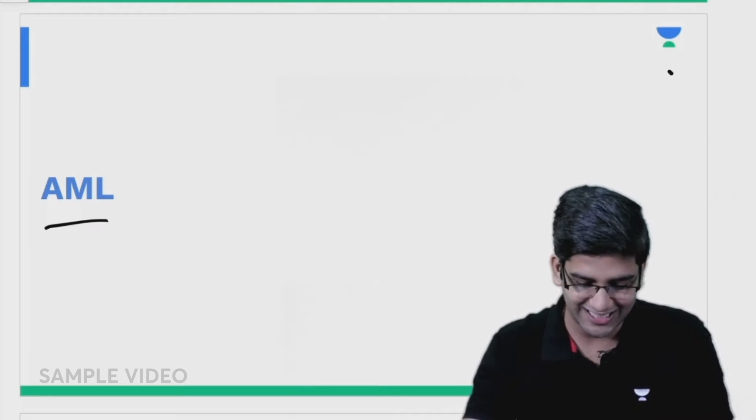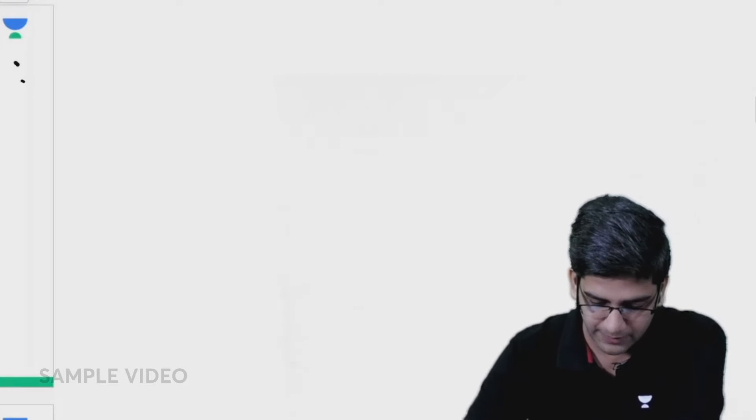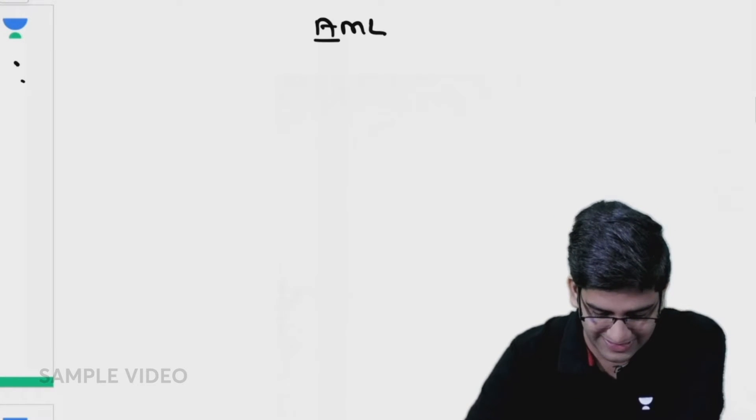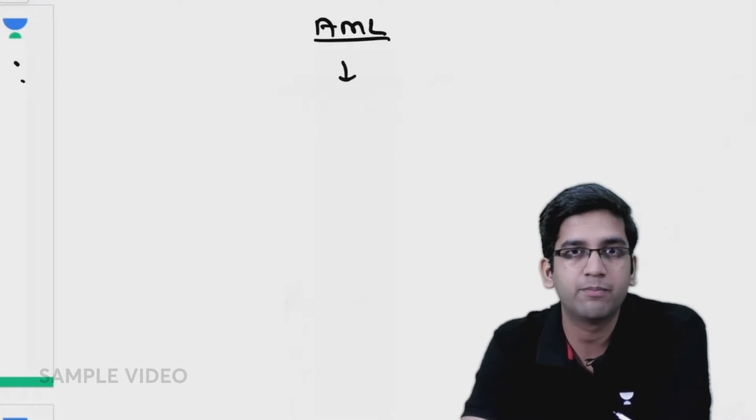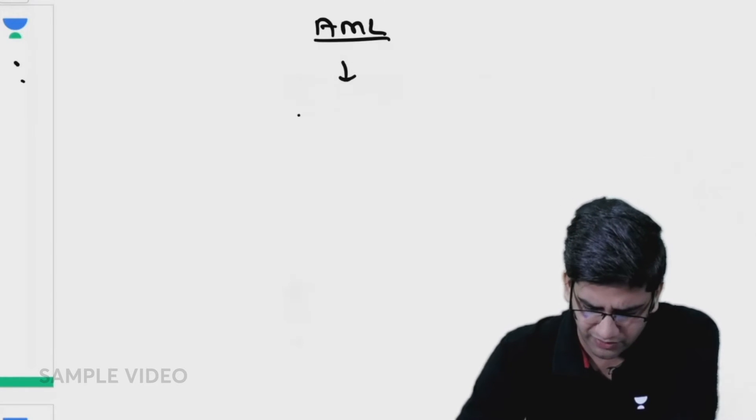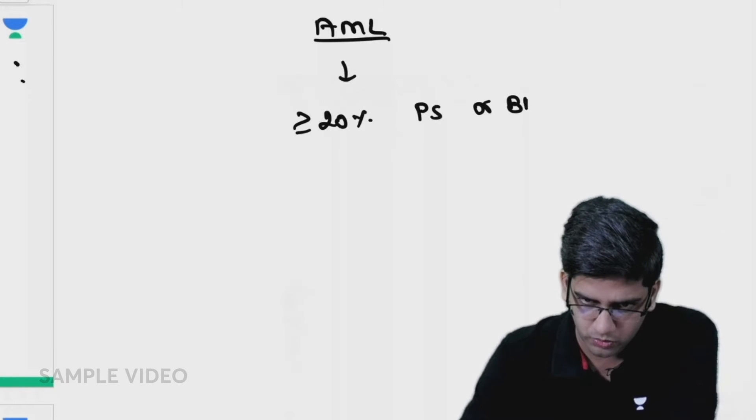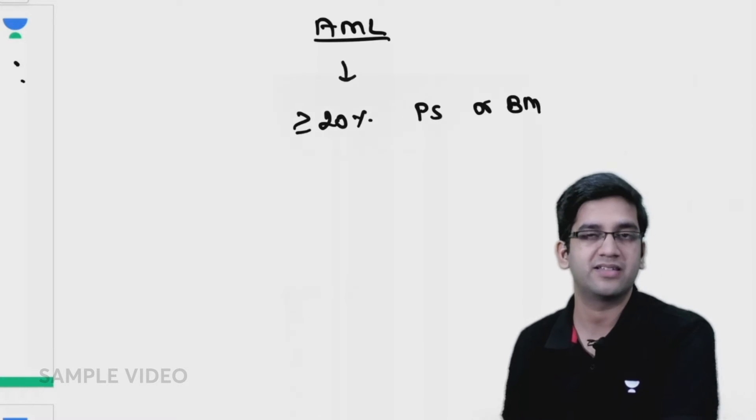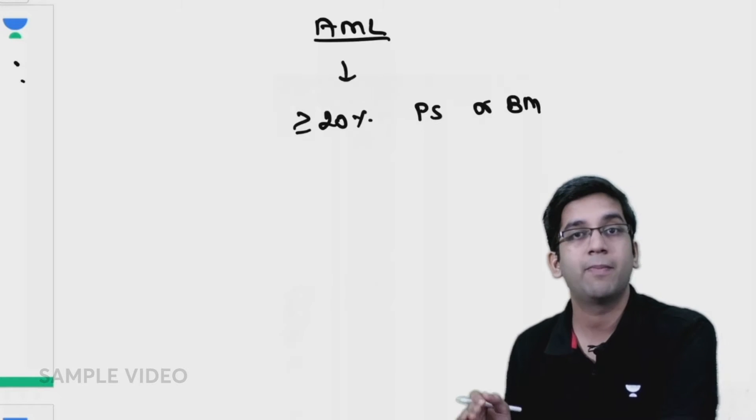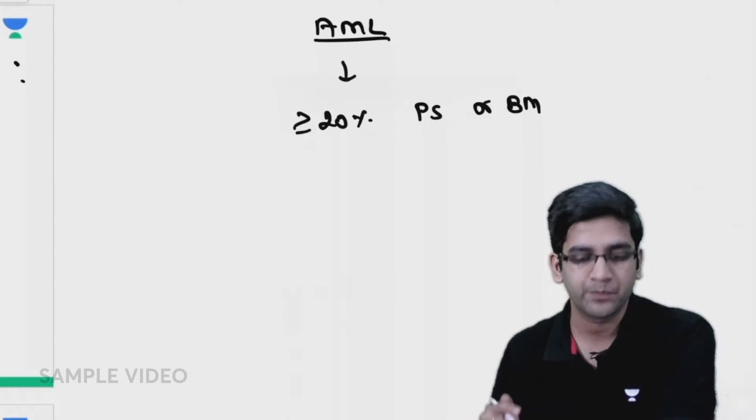About acute myeloid leukemias, AML has the same criteria. The blast percentage is the same - I should have more than or equal to 20% blasts in peripheral smear or in the bone marrow. That remains the same.